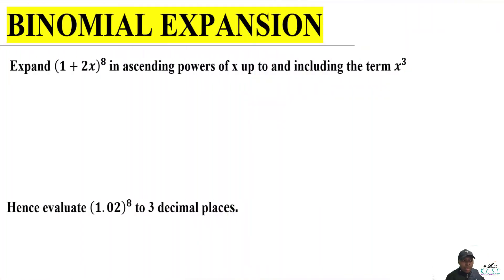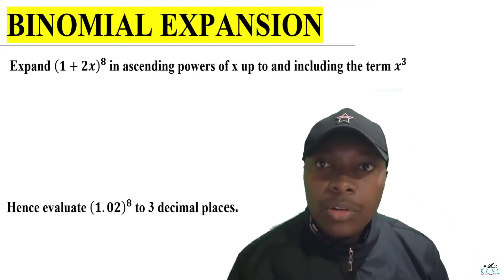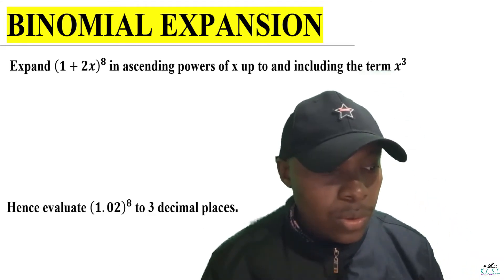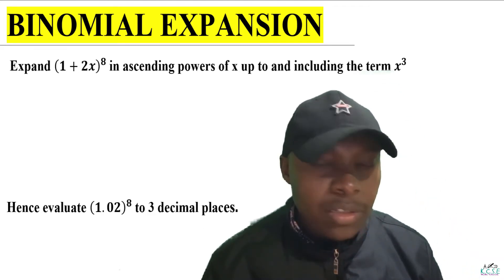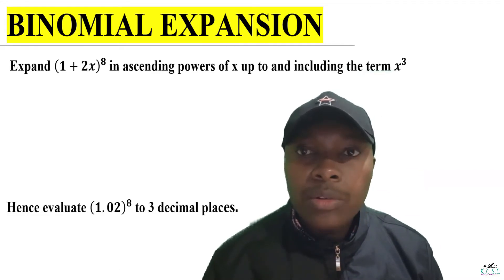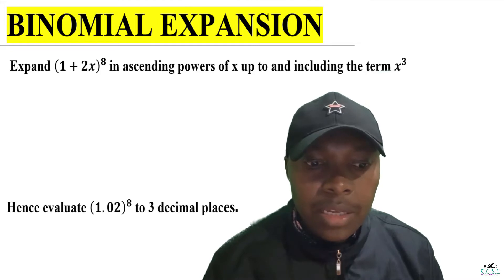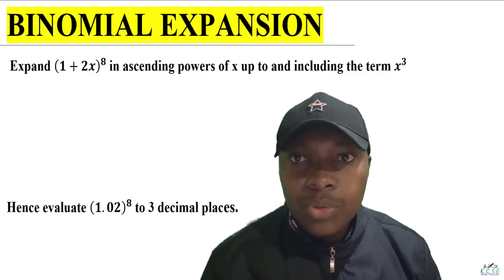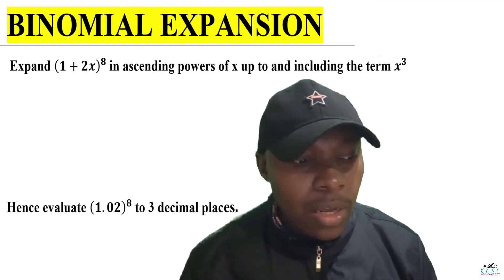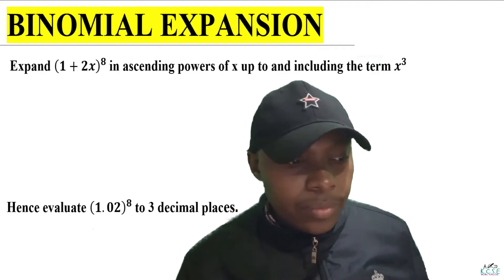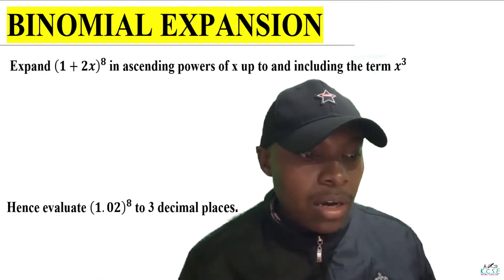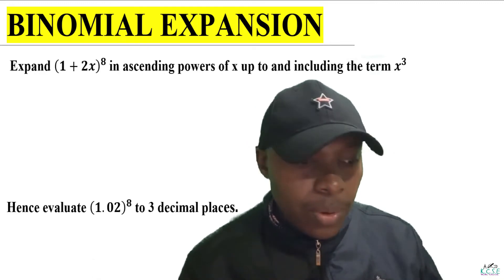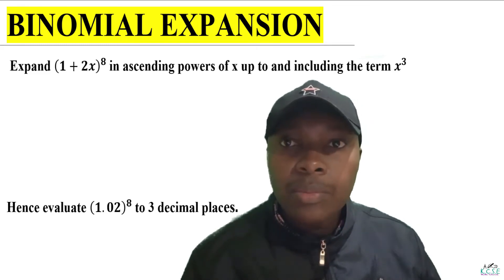Binomial expansion. Let us work out this question on binomial expansion. Suppose we expand (1 + 2x) raised to power 8 in ascending powers of x, up to and including the term in x cubed. We are not going to give the full expansion — only up to the term in x cubed. Then the second part: hence evaluate 1.02 raised to power 8 to 3 decimal places. So let's begin.